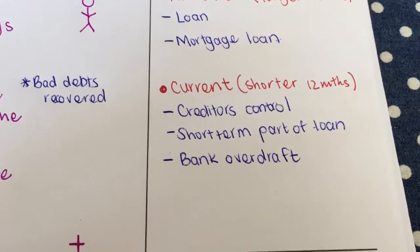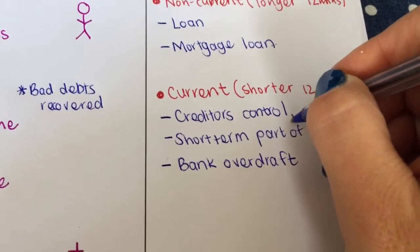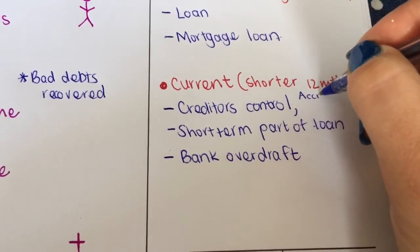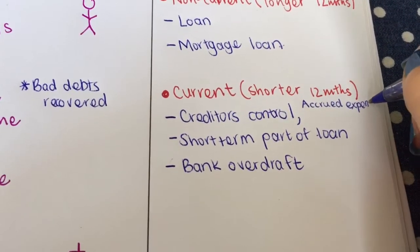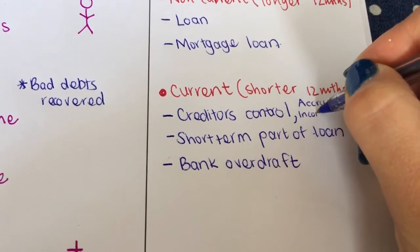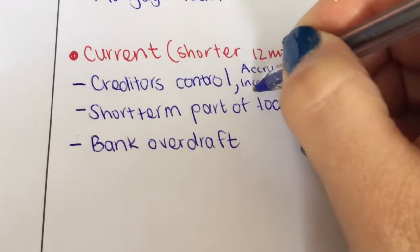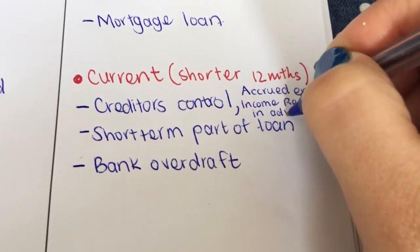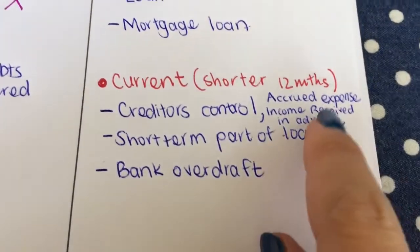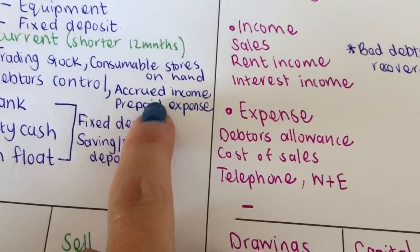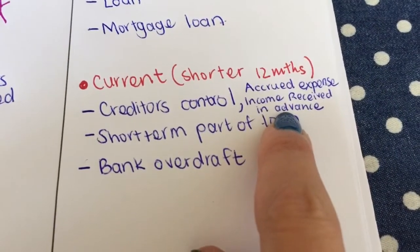And then there's a whole list of new ones. I'm just going to add over here, linked to my creditors, we will have accrued expense that you're going to learn about, and income received in advance. As I said, there's a lot more as well, but for now you'll see that's accrued expense. Over here we had accrued income. Over there we had prepaid expense. There we have income received in advance.